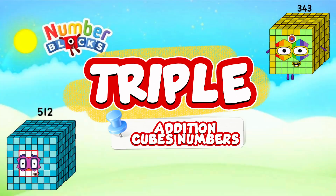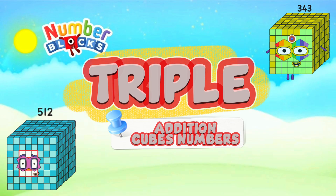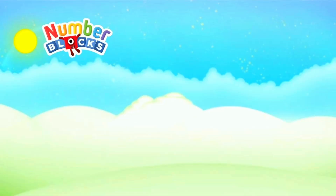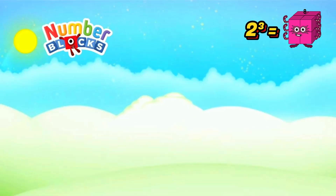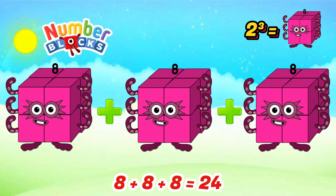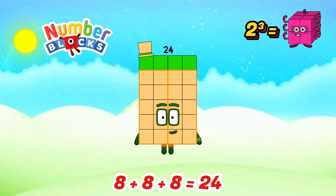Triple Edition Cubes Numbers. Cube of 2 is 8. When we add 8 three times, the answer is 24. Amazing!